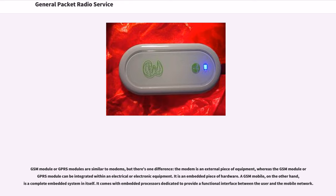GSM modules or GPRS modules are similar to modems, but there is one difference: the modem is an external piece of equipment, whereas the GSM module or GPRS module can be integrated within an electrical or electronic equipment — it is an embedded piece of hardware. A GSM mobile, on the other hand, is a complete embedded system in itself, with embedded processors dedicated to provide a functional interface between the user and the mobile network.